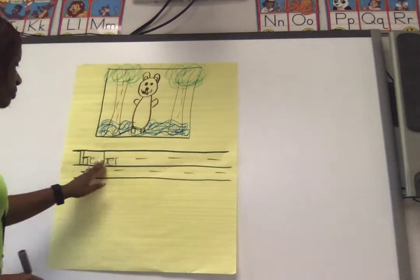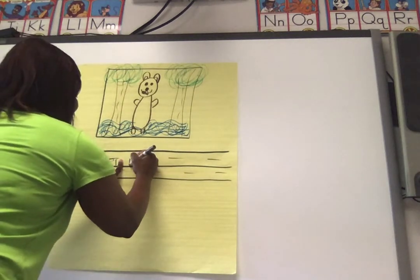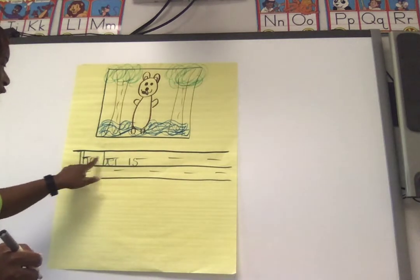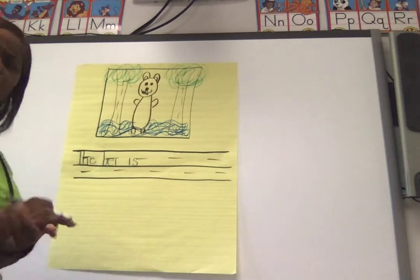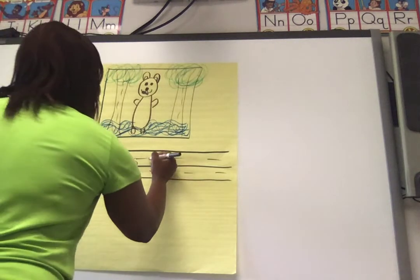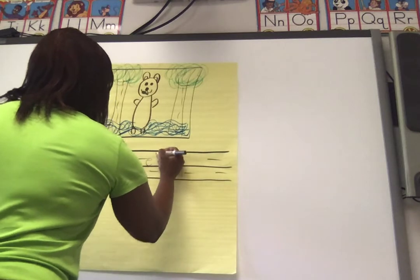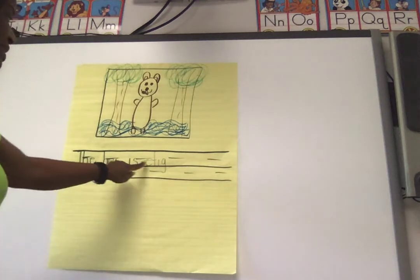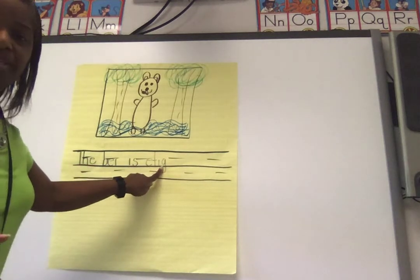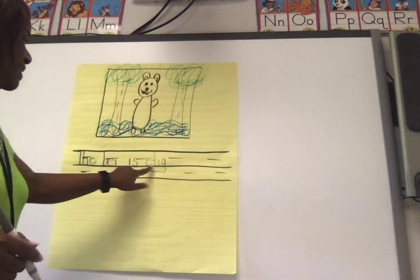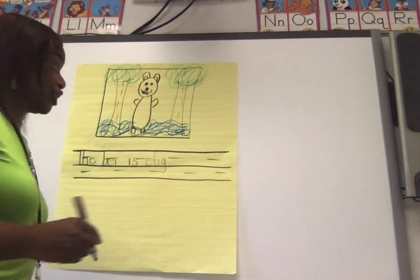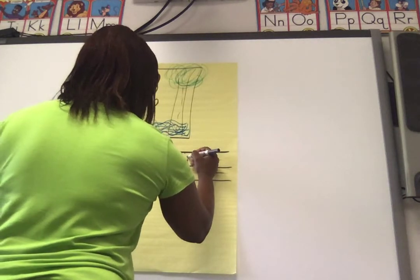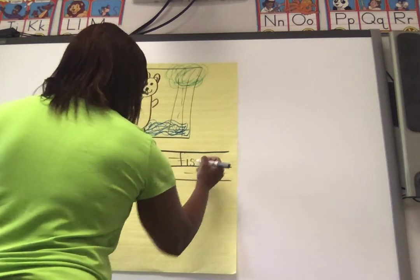That's how we stretch. 'The bear is' — 'is' is a lightning word. Good readers write, then they go back and read it. The bear is — what's the bear doing? The bear is eating. Those are the sounds you hear, aren't they? The bear is eating fish. Finger space. Fish.